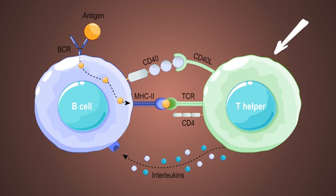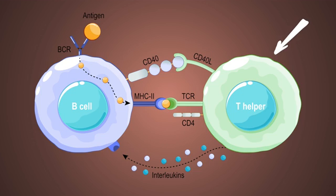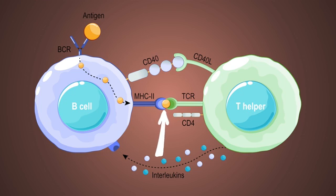The next thing that happens is that helper T-cells come into play. T-cell receptors — I'll call them TCRs — recognize and bind to the West Nile virus antigen-MHC2 complex on the B-cell surface. This interaction, along with additional signals from the helper T-cell — things like CD40L binding to CD40 — provide the necessary co-stimulation for the B-cells to become fully activated.